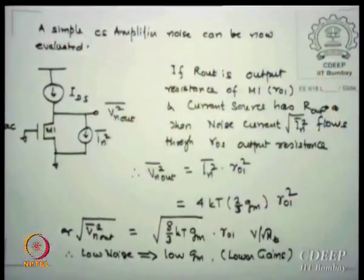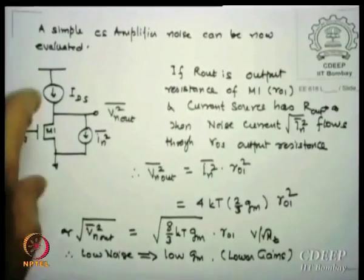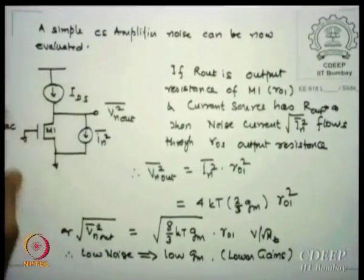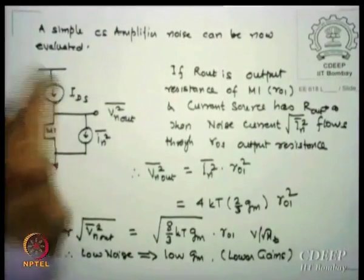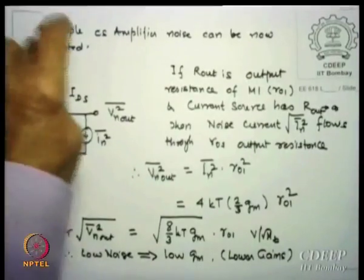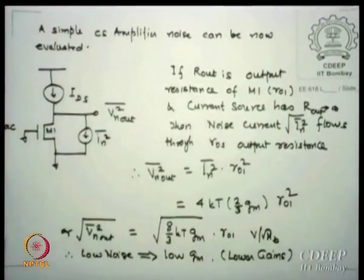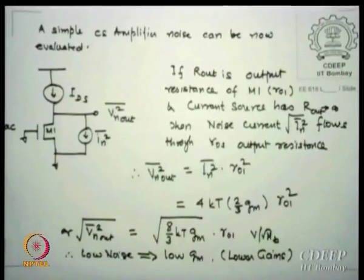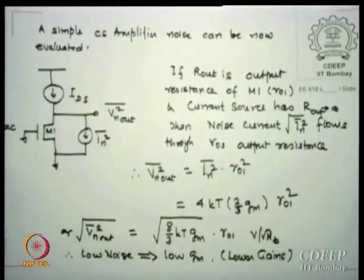This is what we did last time: we were looking for a common source amplifier, driven by a fixed current source biasing. For each transistor there is an equivalent noise current source i_n squared. Since the impedance at this node is r_o, we get v_out noise squared equals i_n squared times r_o1 squared.